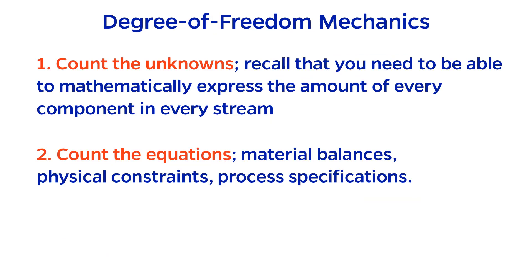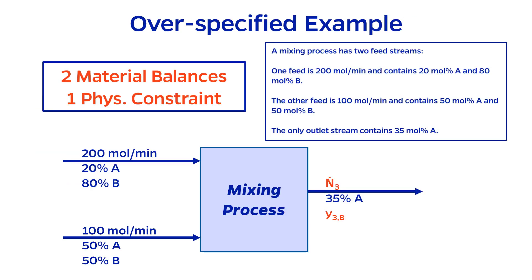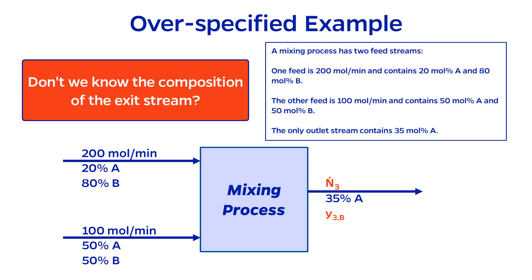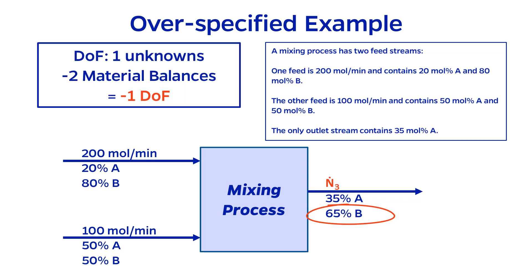Next, count the number of equations. These can come from various sources, and we've already covered three of them: material balances, physical constraints, and process specifications. In the example, there are two material balances because there are two components, and a physical constraint. Performing the degree of freedom yields 2 minus 2 minus 1 for a net negative 1 degrees of freedom. If you've been shouting at your computer screen that Y3b isn't really an unknown, you're absolutely right. However, this doesn't change the conclusion. It's fairly easy to see that Y3b is 65%, but realize that I am solving the physical constraint mentally. If I label it like this, the number of unknowns decreases from 2 to 1, but I cannot count the physical constraint equation either, so my degree of freedom becomes 1 unknown minus 2 material balances for the same negative 1 degrees of freedom.